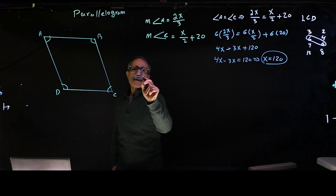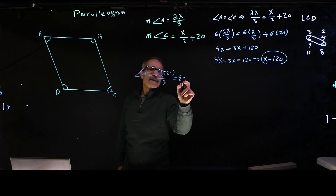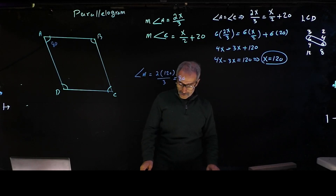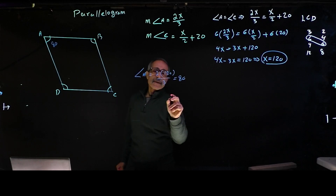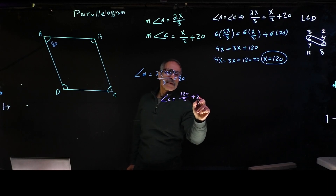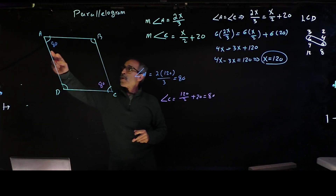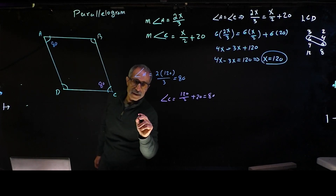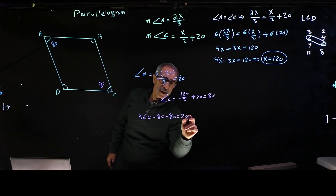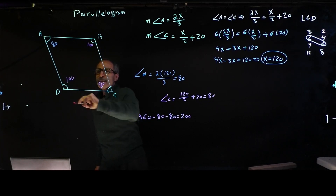Angle A is equal to 2 times 120 divided by 3, which is 80 degrees. Angle C is 120 divided by 2 plus 20 — that's 60 plus 20, which is also 80 degrees. For the remaining two angles, we know all four angles sum to 360 degrees. 360 minus 80 minus 80 equals 200, and dividing equally gives us 100 degrees each for angles B and D.